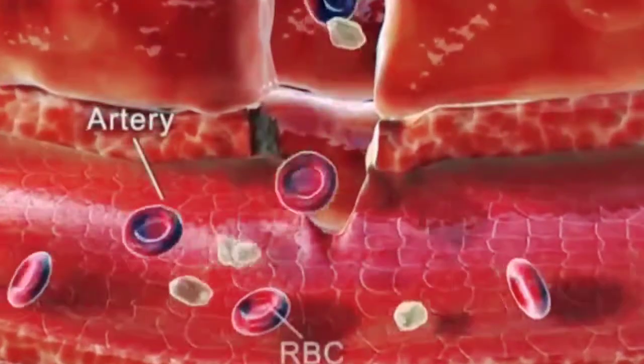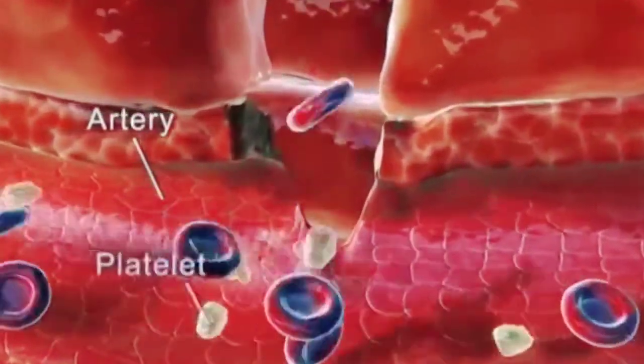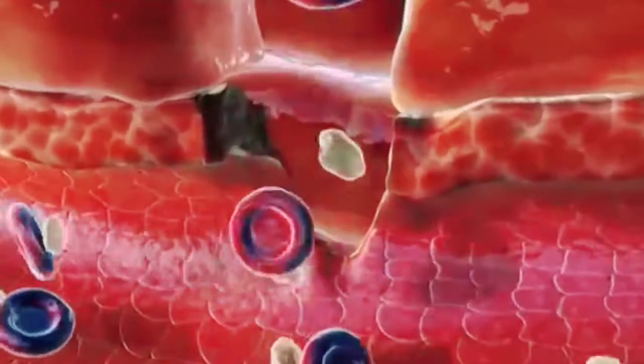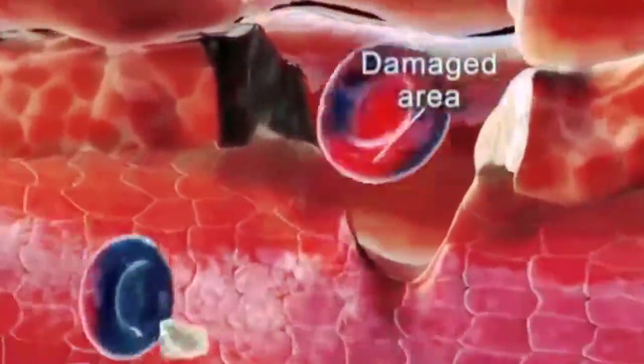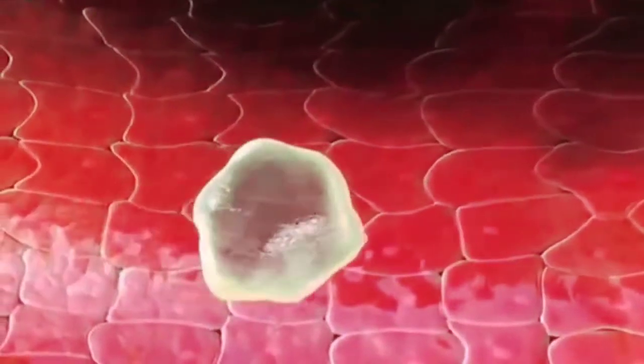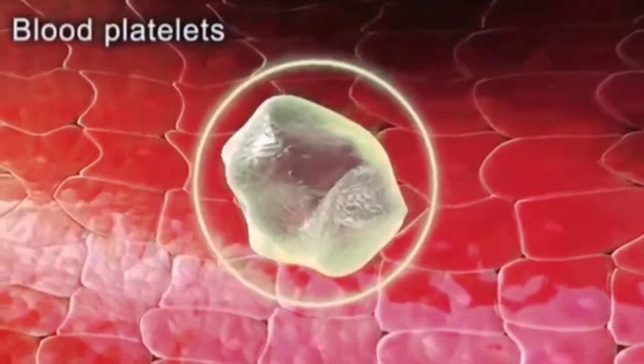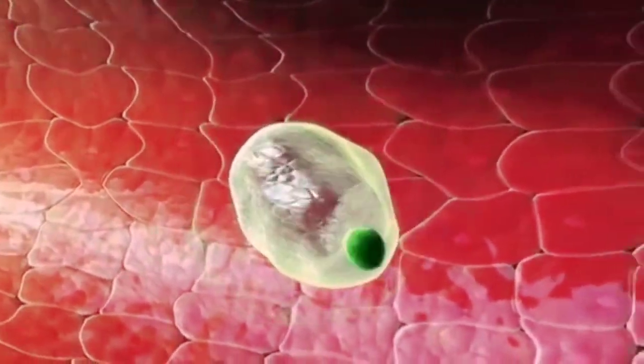Inside the artery, we observe the RBCs and platelets, which escape out through the damaged area. The platelets play a very important role in the initiation of blood clotting. The blood platelets release a substance called thromboplastin.